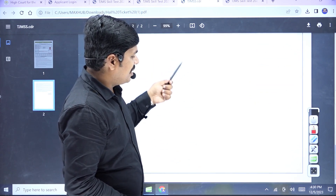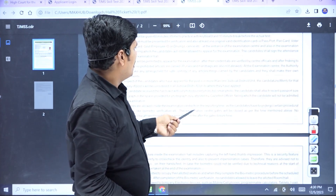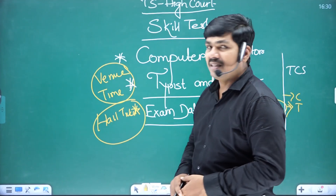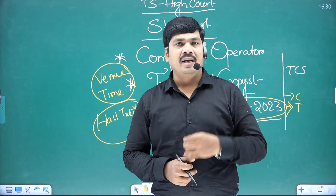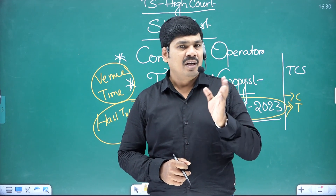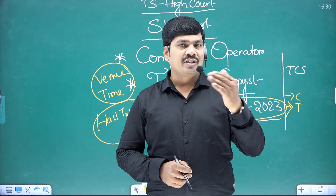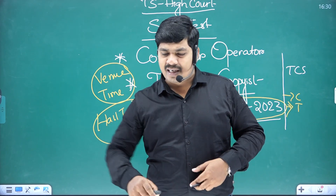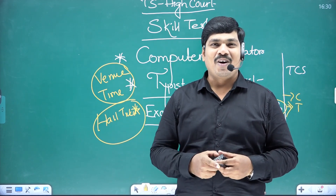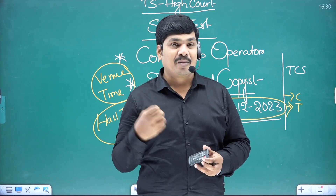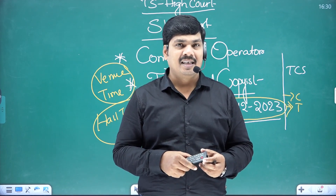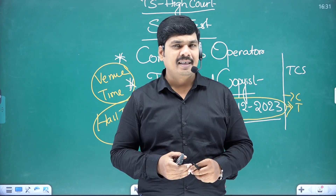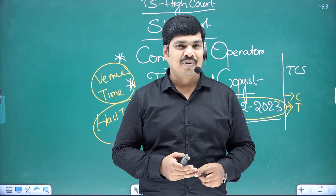This is the detailed information about the copyist and typist skill test. The reporting time and gate closing time information is on the hall ticket — gate closing time is critical. If you have any questions, please leave them in the comments — typing problems, keyboard problems — I will answer quickly. I hope you understand clearly. Thank you.